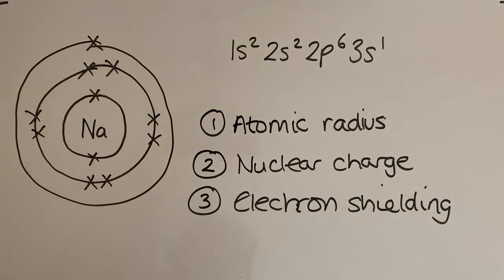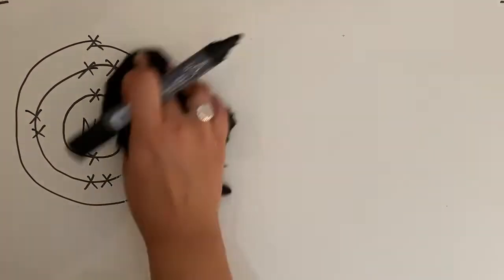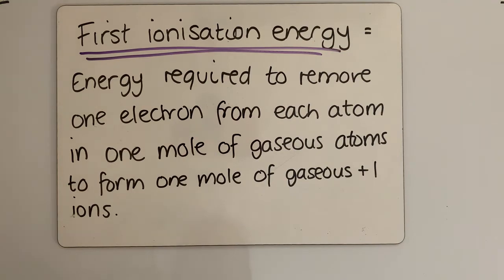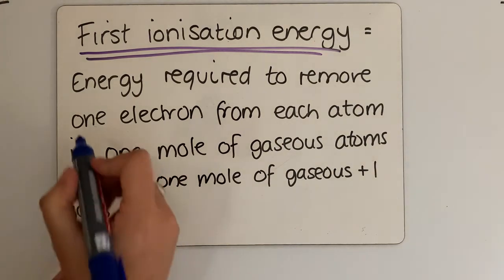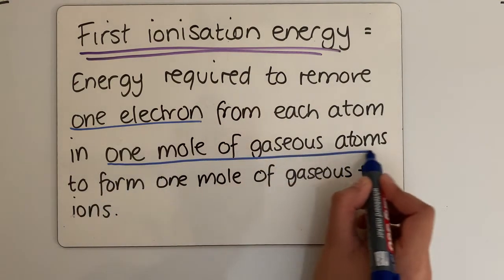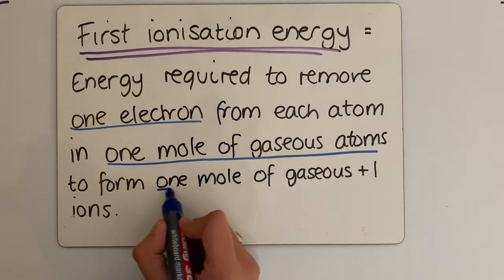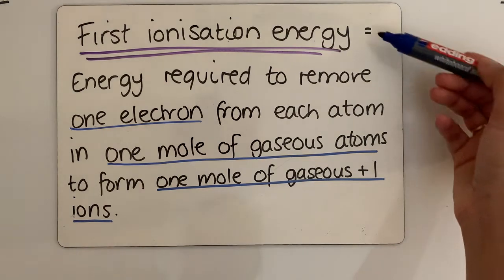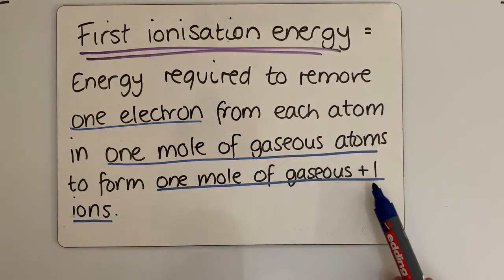Let's look at some definitions, sticking with sodium. The first ionization energy is the energy required to remove one electron from each atom in one mole of gaseous atoms to form one mole of gaseous plus one ions. This definition is usually worth two to three marks, so it is worth knowing.